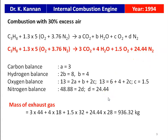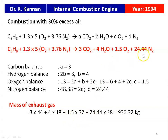Calculating the mass of exhaust gases: 3 moles CO2 = 3×44; 4 moles H2O = 4×18; 1.5 moles O2 = 1.5×32; 24.44 moles N2 = 24.44×28. The total mass calculates to 936.32 kg, which is the answer to the problem.